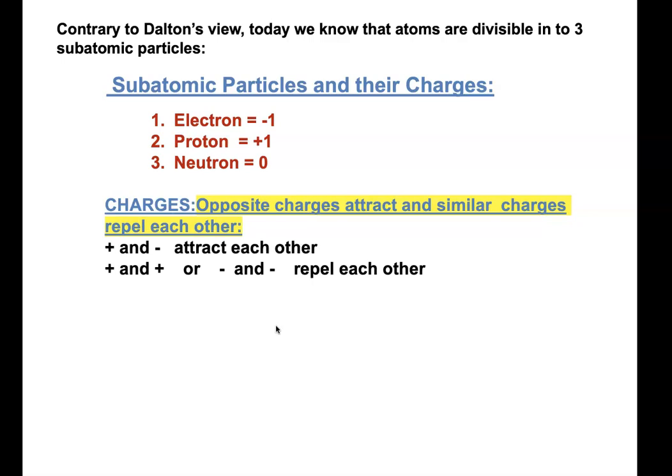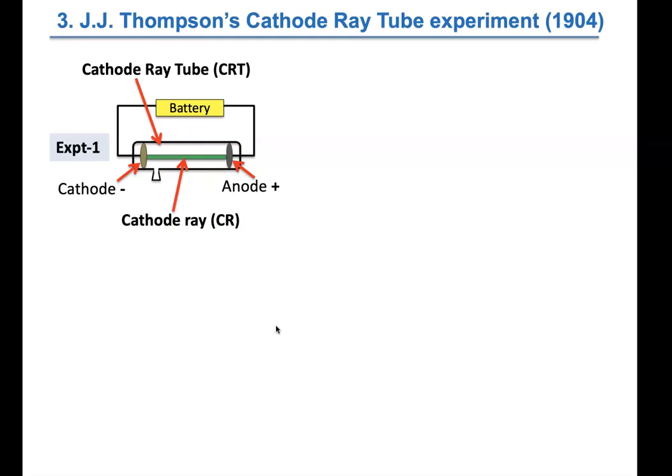Now let's look at the third model, proposed by J.J. Thomson, a British physicist interested in understanding what cathode rays were. You may have heard of CRT — cathode ray tubes. Old televisions, not the plasma ones, and older computer monitors were very large because they were made with long cathode ray tubes.